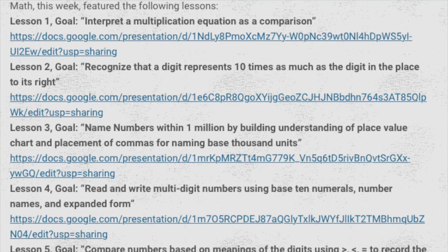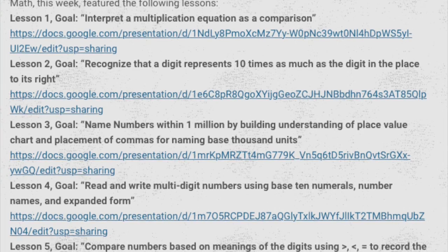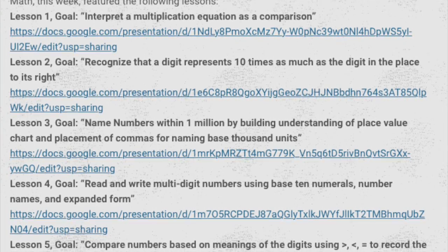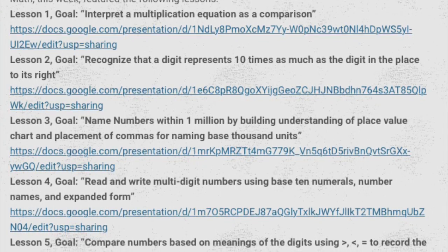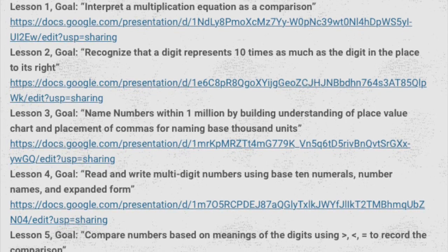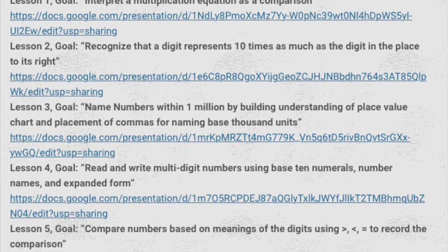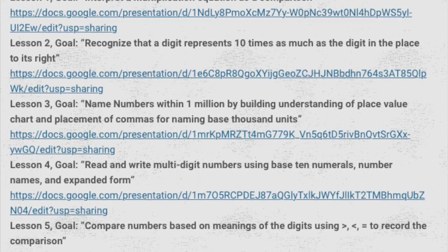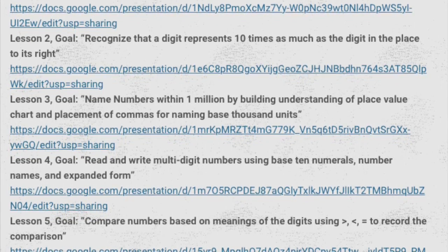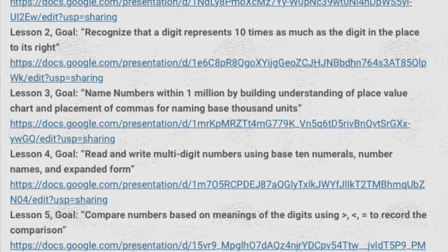This week, your child had the opportunity to work through these lessons. Lesson 1's goal was to interpret a multiplication equation as a comparison. Lesson 2's goal was to recognize that a digit represents 10 times as much as the digit in the place to its right. Lesson 3's goal was to name numbers within 1 million by building understanding of the place value chart and placement of commas for naming base thousand units. Lesson 4's goal was to read and write multi-digit numbers using base ten numerals, number names, and expanded form.